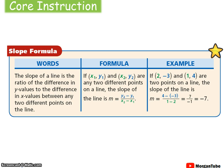The slope formula can be described in three forms: words, formula, or example. The slope of a line is the ratio of the difference in y values to the difference in x values — also described as the change in rise over the change in run between two different points on the line. If (x1, y1) and (x2, y2) are any two different points on a line, then the slope M equals y-sub-2 minus y-sub-1 over x-sub-2 minus x-sub-1. This is essentially the difference in your y's over the difference in your x's — the rise over the run.